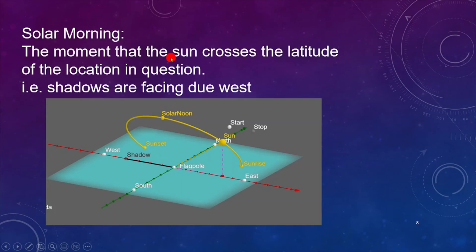Of course, it only crosses the line of latitude in certain months of the year. So the definition of solar morning is the moment that the Sun crosses the latitude of the location in question, i.e., the shadows are facing due west.